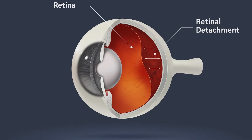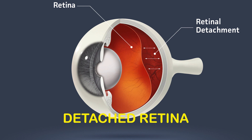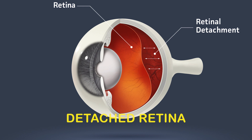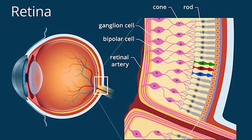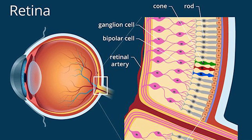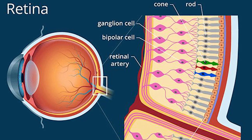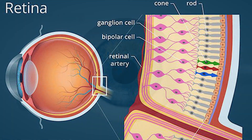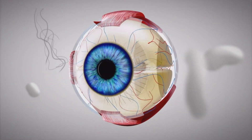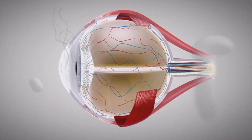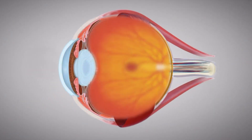Retinal detachment, or a detached retina, is a serious eye condition. The retina, the layer of tissue in the back of the eye, pulls away from the tissues supporting it. Sudden changes, including eye floaters and flashes and darkening side vision, are signs this may be happening. A detached retina needs treatment as soon as possible.